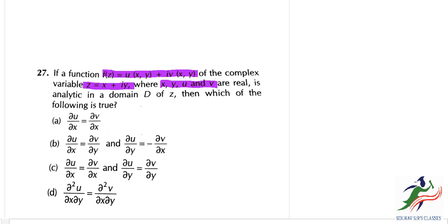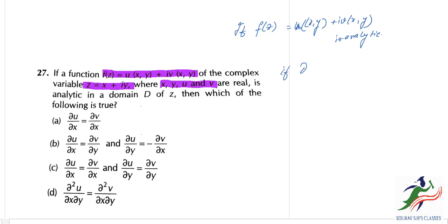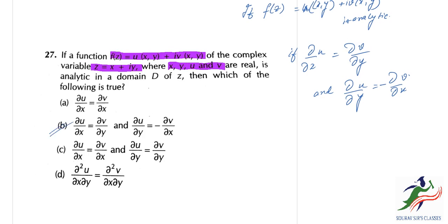If f(z) = u(x,y) + i·v(x,y) is analytic, then the Cauchy-Riemann conditions hold — the partial derivatives satisfy the standard analyticity conditions. The correct answer is B.